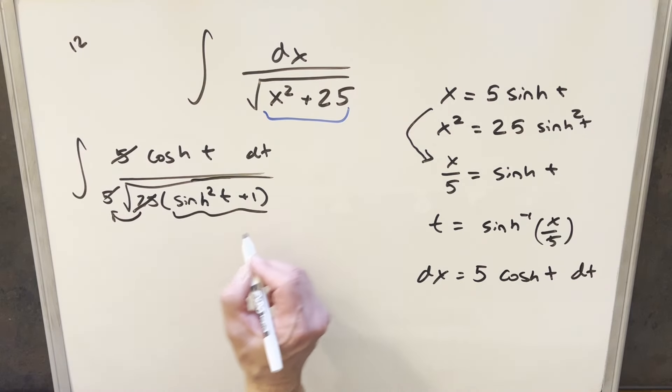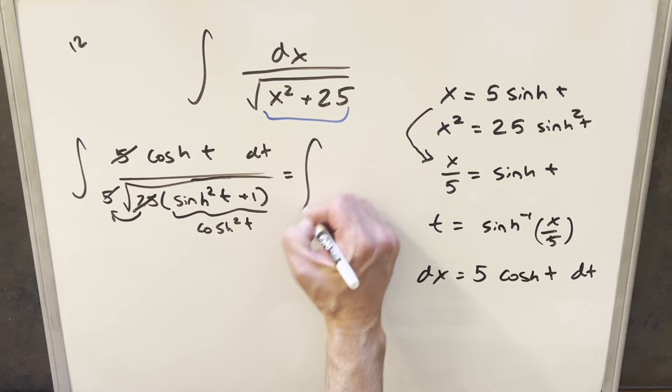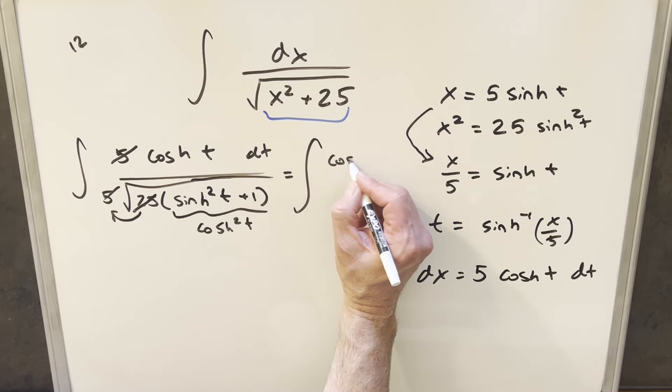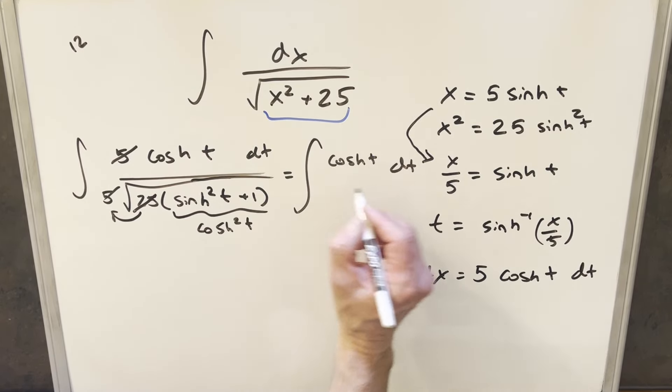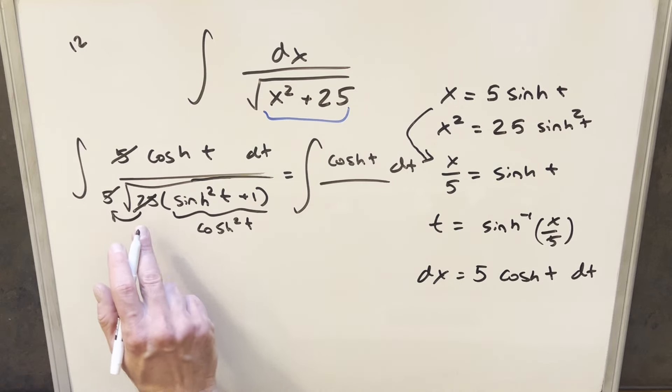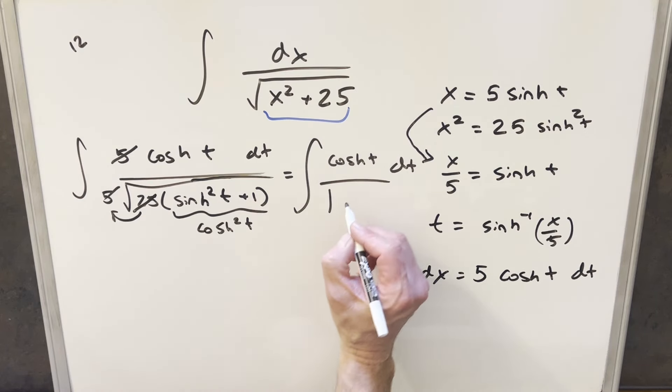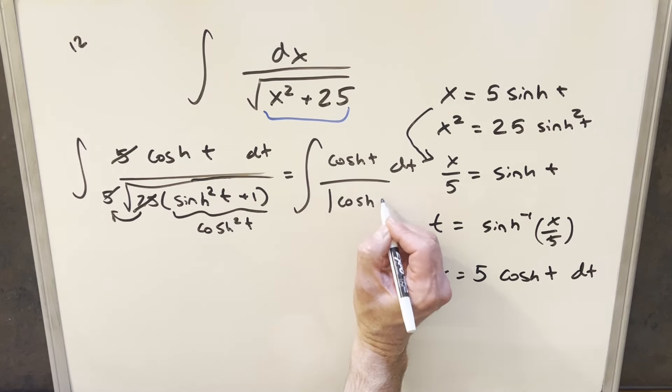Then again, with that identity I just had a minute ago, this is the same thing as cosh squared t. So cleaning everything up, we'll just use some space over here. We'll have our cosh t dt here. And then this square root of cosh squared t is going to give me absolute value of cosh t.